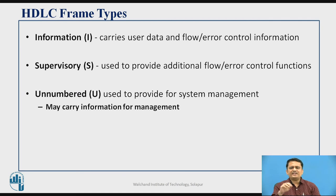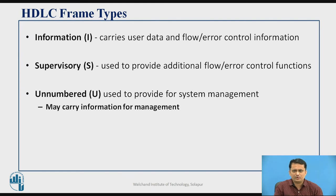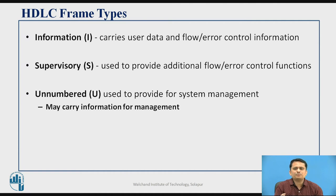There are three types of frames in HDLC: the Information frame (I-frame), Supervisory frame (S-frame), and Unnumbered frame (U-frame). The I-frame carries data and is used for flow and error control. The S-frame provides additional flow control and error control functions. Unnumbered frames are used for link management.